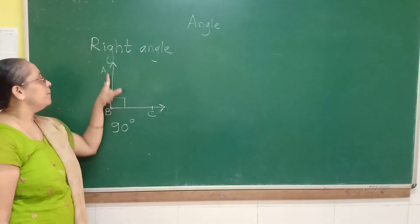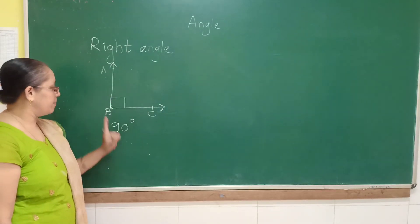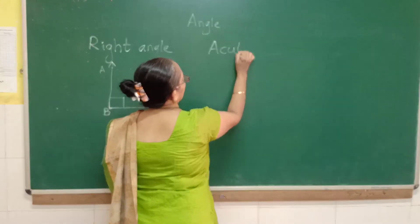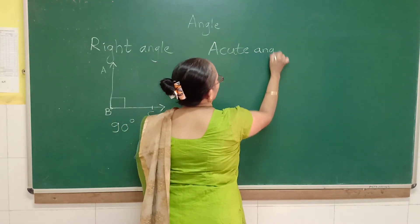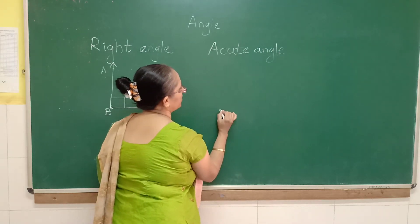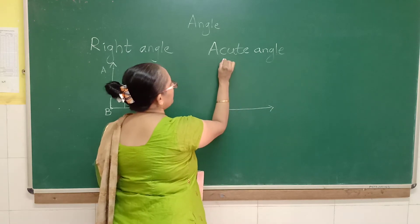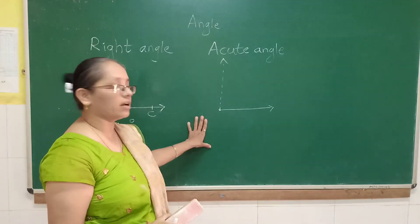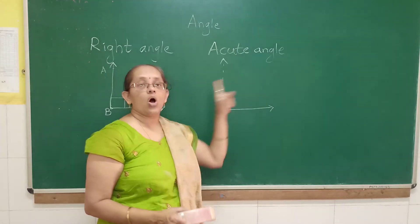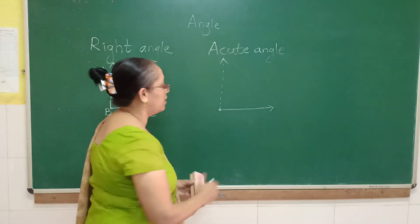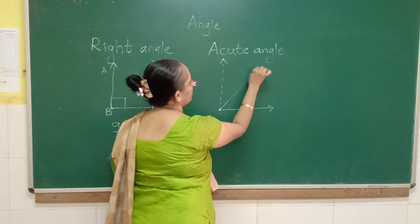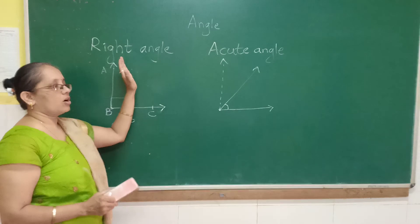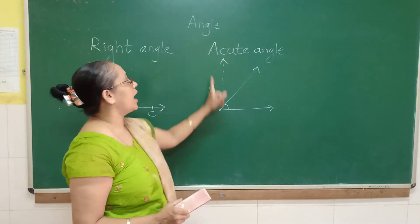When the two rays make an angle that measures 90 degrees, it is called a right angle. Next is the acute angle. Here I am adding a common starting point — one ray this way, and the 90 degree right angle is shown in a dotted line. All the angles which are less than the right angle are known as acute angles.